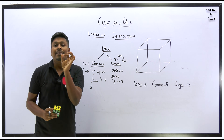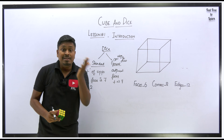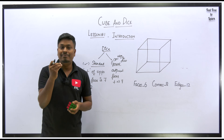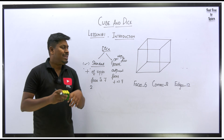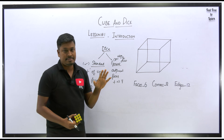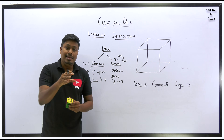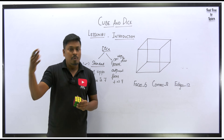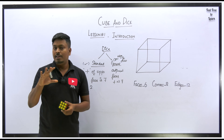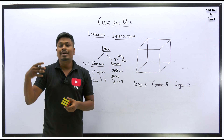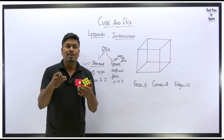Before solving every dice question, you must first decide whether the given image is a standard dice or a general dice. After identifying the type, start solving the question — only then will it feel easy. Also, there are many shortcuts and techniques for solving dice questions, but try to learn only one or two methods. Don't learn all five or six shortcuts, or you will get confused on difficult questions. Pick one or two and become strong on those.